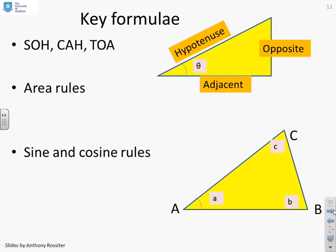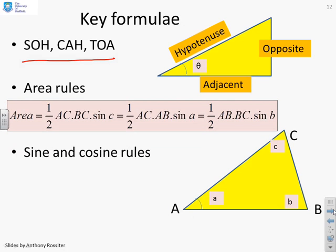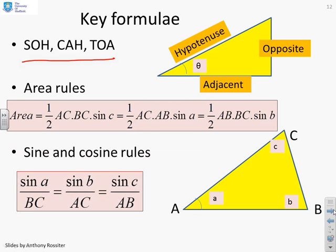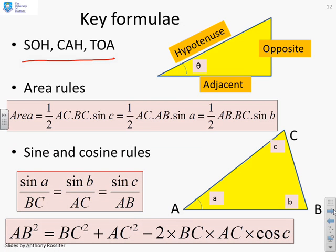So in summary, key formulas that you should be aware of. You should know your SOH, CAH, TOA rules, which work with right angle triangles. You should know your area rules. And you should know the sine rule and the cosine rule for non-right angle triangles.